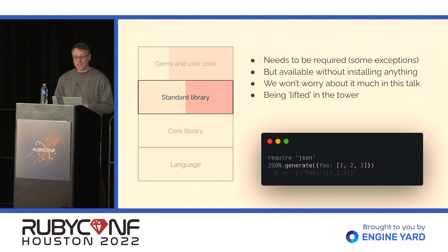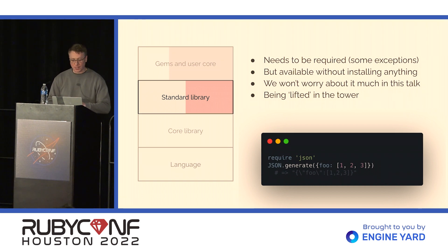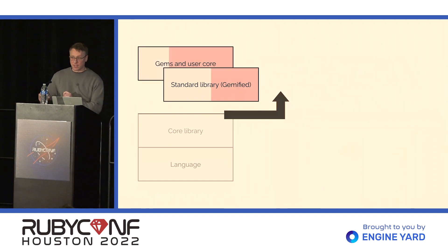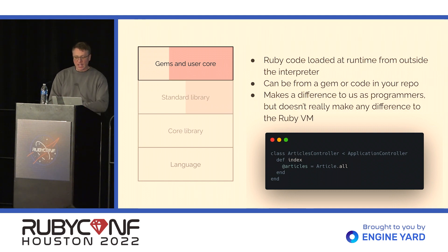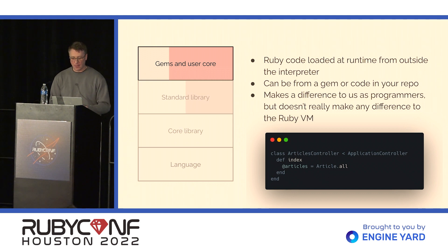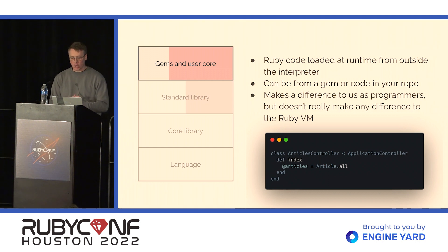On top of that is the standard library. This needs to be required — with some exceptions — but it's available without installing anything; it's part of the Ruby distribution. Something slightly interesting is it's being lifted in the tower: over time, the standard library is becoming a gem, being gemified and made something you can install separately. On top of this, you have your gems and user code — Ruby code loaded at runtime from outside the interpreter. It can be from a gem or from code in your repo. That makes a big difference to us as programmers, but for the VM it doesn't really matter — it's all code loaded from disk at runtime. Sometimes gems and user code are written in C as well, like Nokogiri or OpenSSL — there's a lot of C code there.